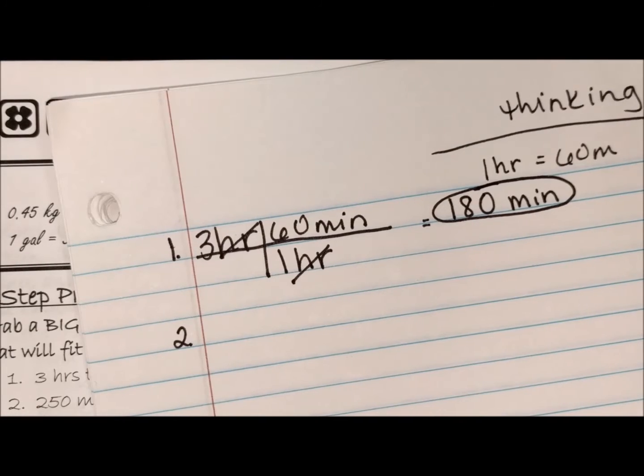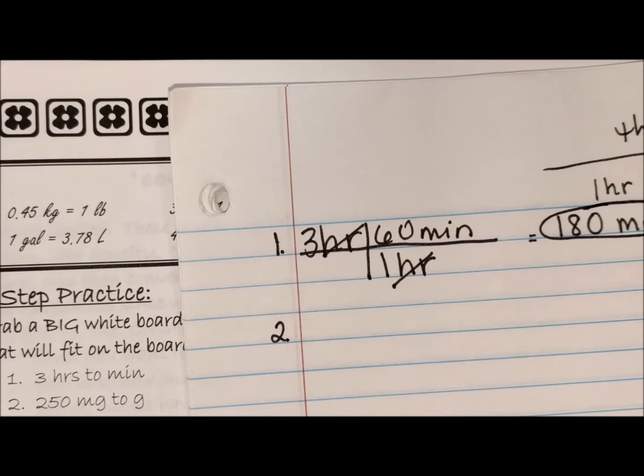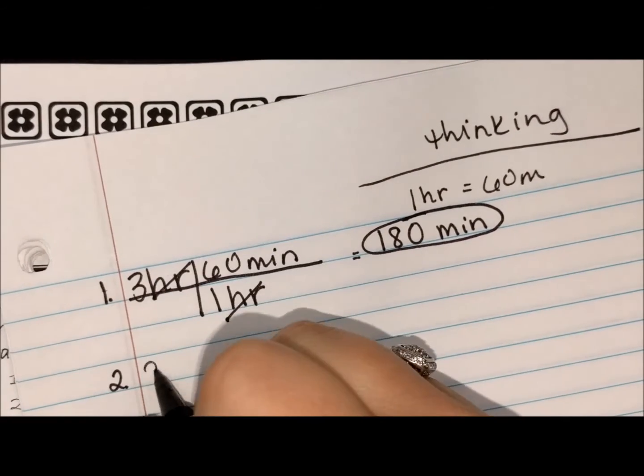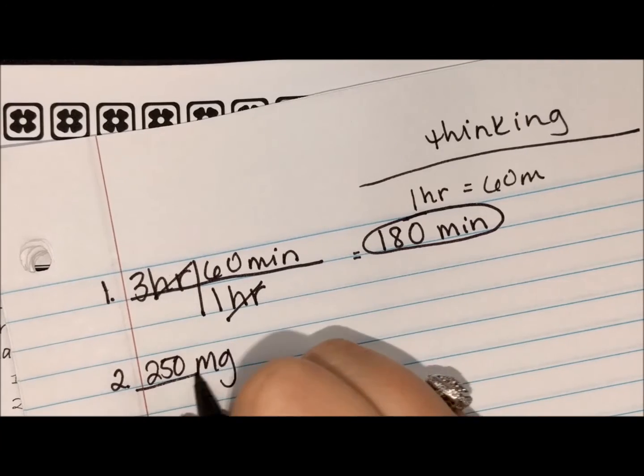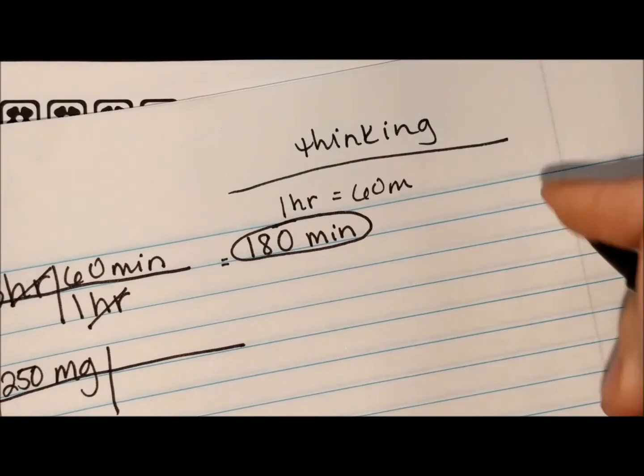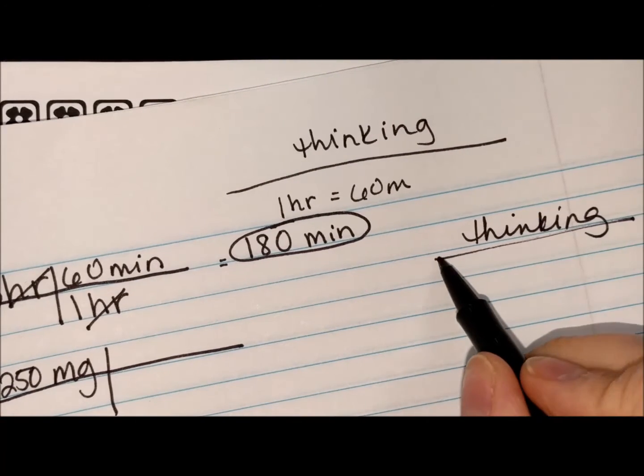Let's do another one. Number two says take 250 milligrams to grams. So 250 milligrams. This is what I'm thinking: I need to know how many milligrams are in a gram.